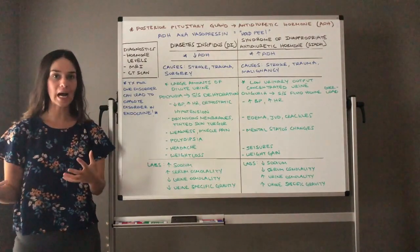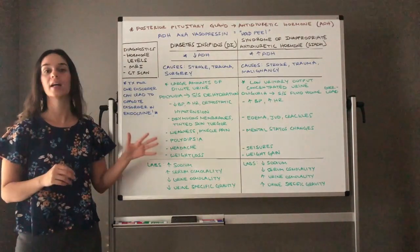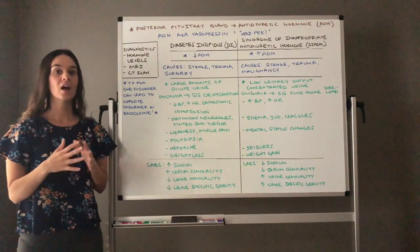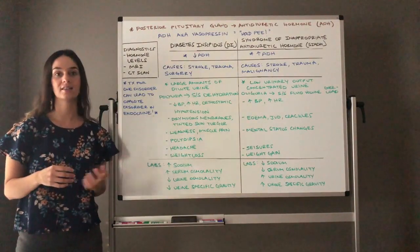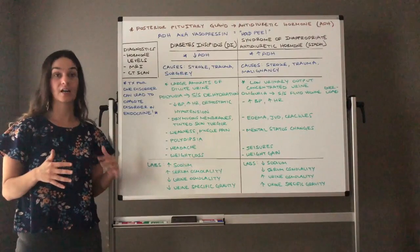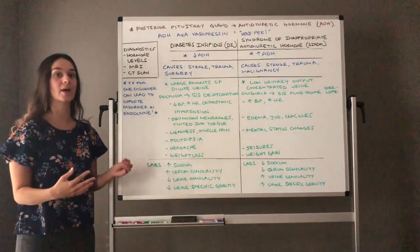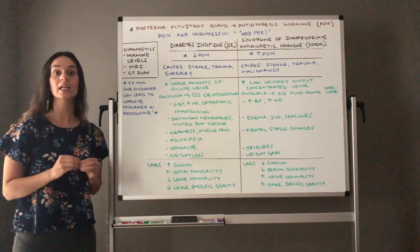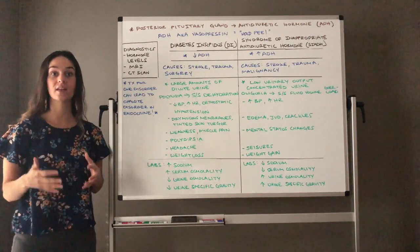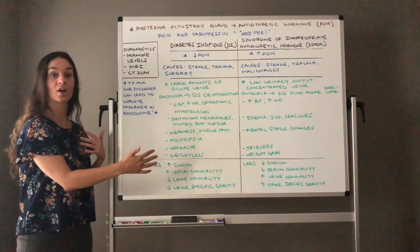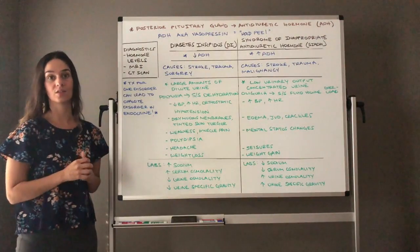So it's better to understand the why, as opposed to just memorizing a lot of assessment data. For instance, Cushing's and Addison's are opposite of one another. Hypothyroidism versus hyperthyroidism. I really encourage you to think about what hormone directly causes the problem and what does that hormone do. Create a chart and compare and contrast the two disorders.